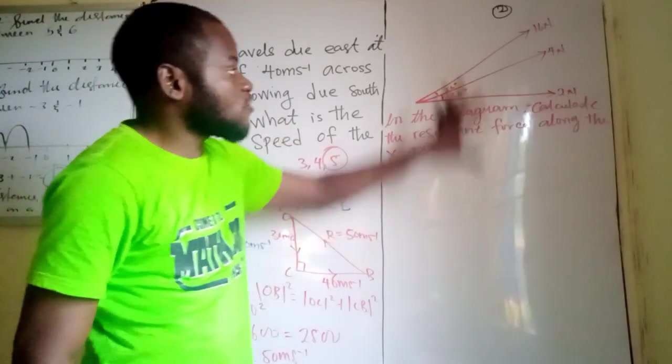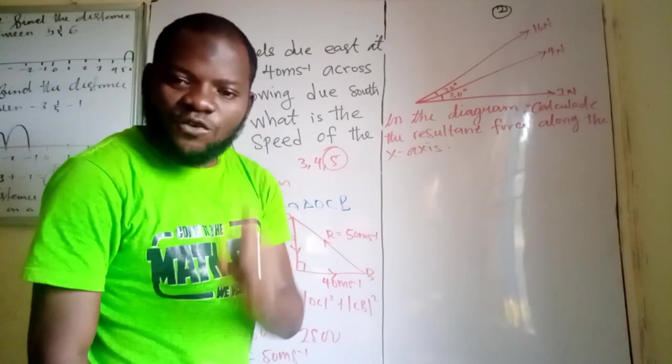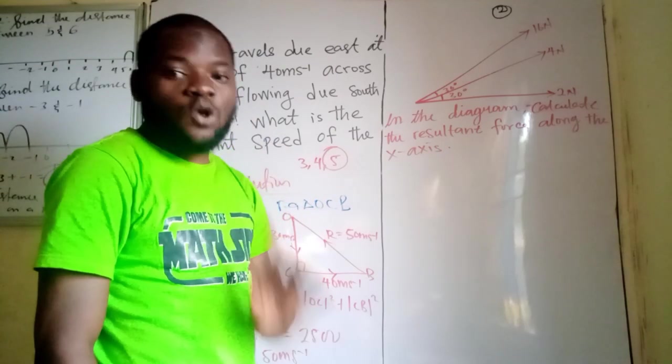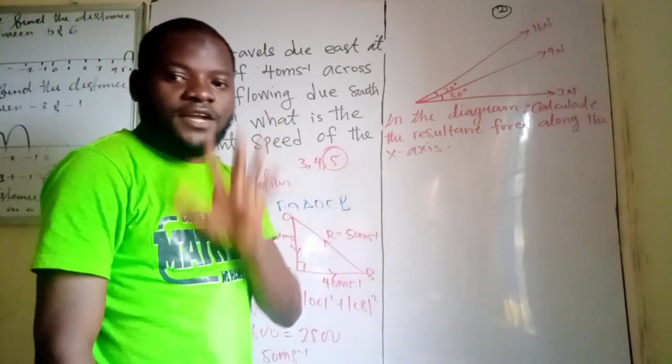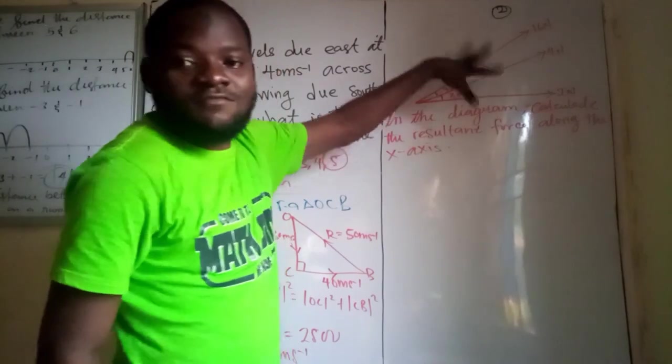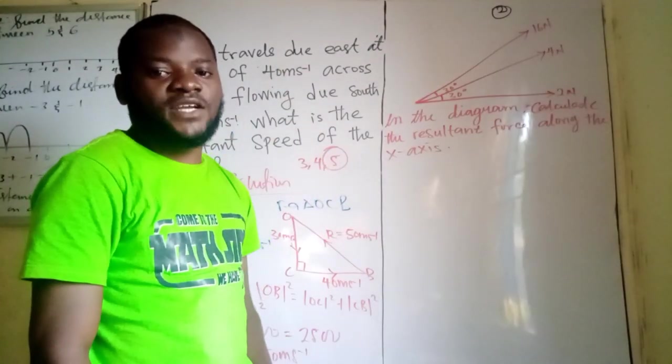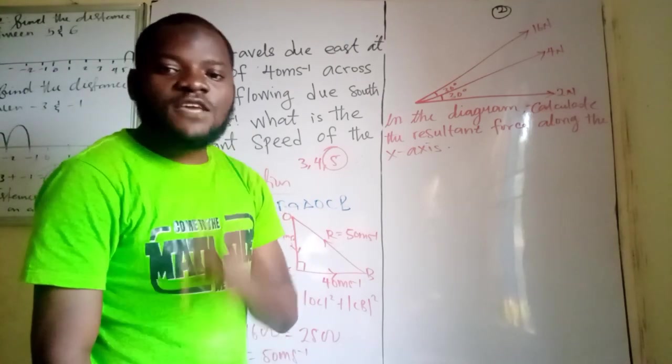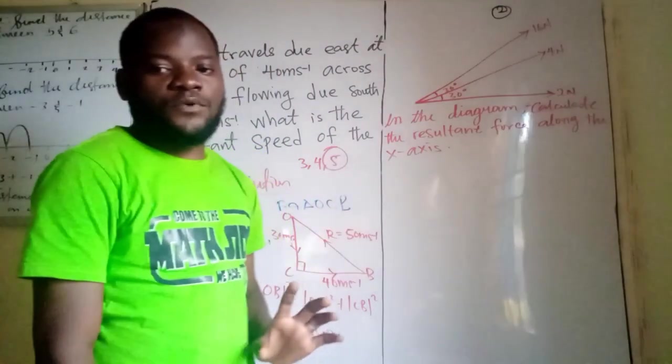They said the resultant force along the x axis only. So you are not to calculate for that of the vertical and you are not to calculate for the resultant force on this particular system. So you are just calculating for that of horizontal components. In other words, we are looking for the summation of the forces along the horizontal component.